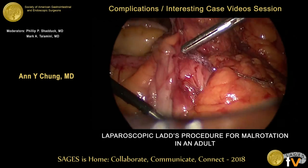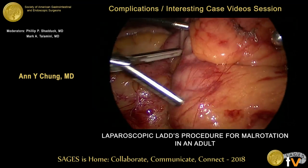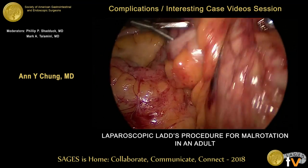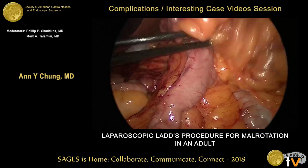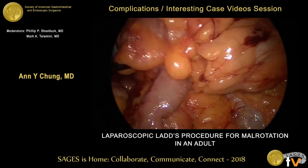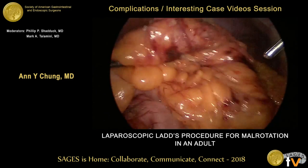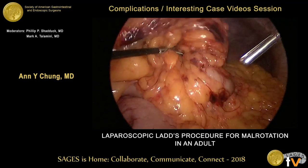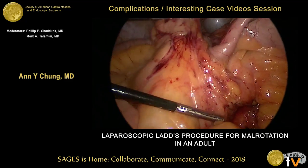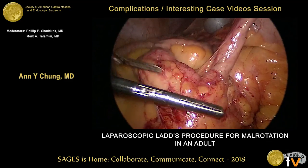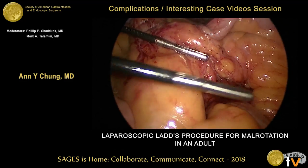That staple line is from our appendectomy, again helping us identify the colon and the small bowel. Once we completed our lysis of adhesions, we placed the small bowel on the right and the colon in the left upper quadrant. Following this, we ensured broadening of the mesentery.